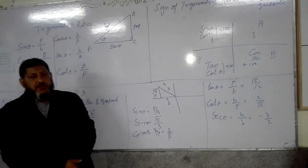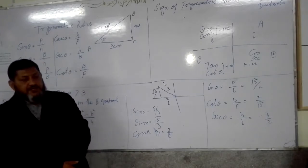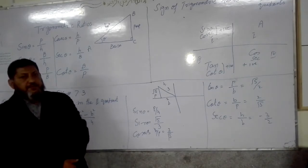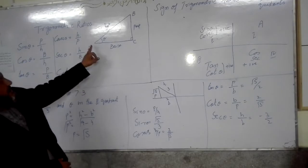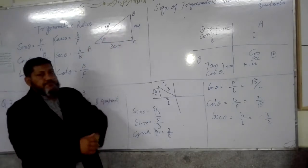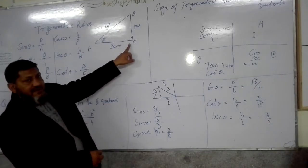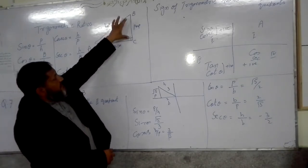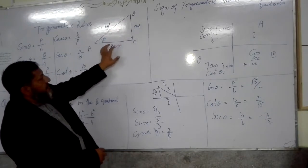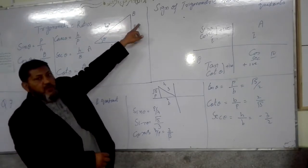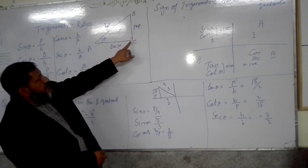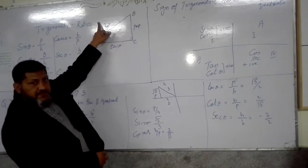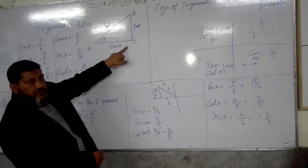The trigonometric ratio is the relationship between two lengths of a triangle. Consider triangle ABC where the right angle is at point C. The side which makes a right angle with the base is called the perpendicular. The opposite side of the right angle is called the hypotenuse, and AC is equal to the base.